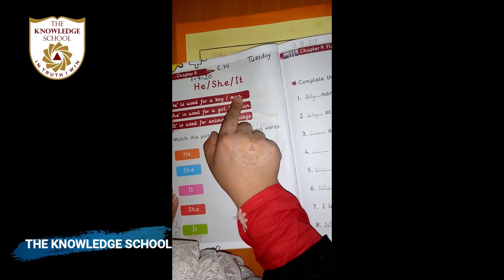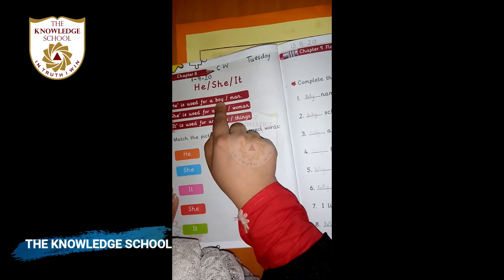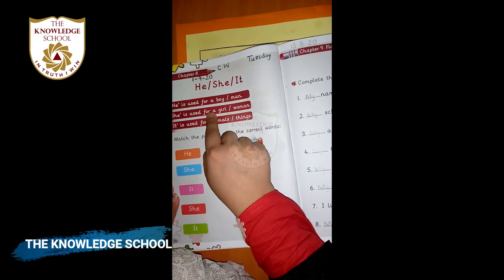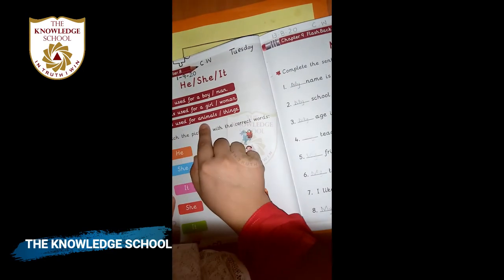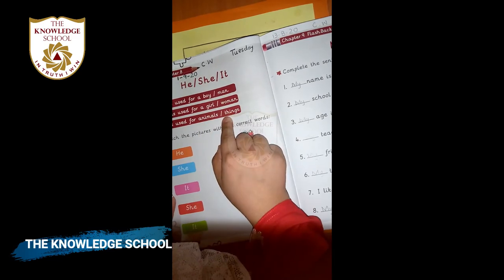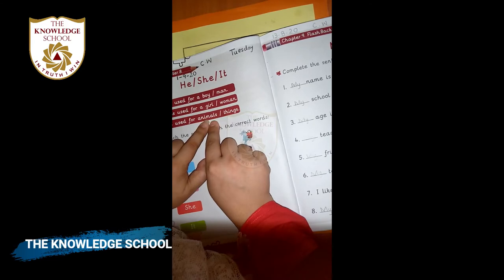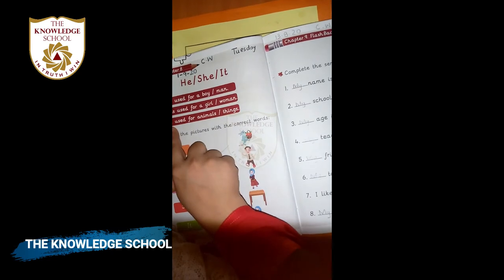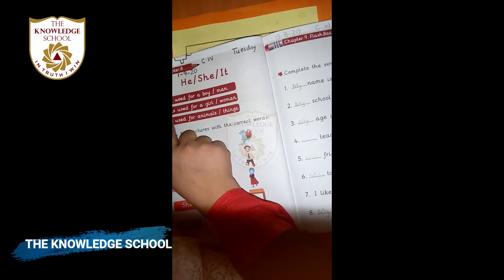He is used for a boy or man — he ہم لڑکے یا man کے لیے use کرتے ہیں۔ She is used for a girl or woman — she ہم girl یا woman کے لیے use کرتے ہیں۔ It is used for animals or things — it ہم کسی بھی animal یا چیز کے لیے use کرتے ہیں۔